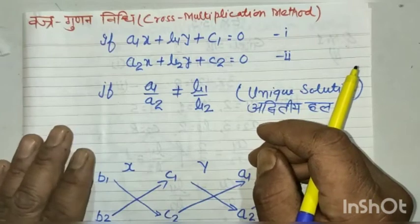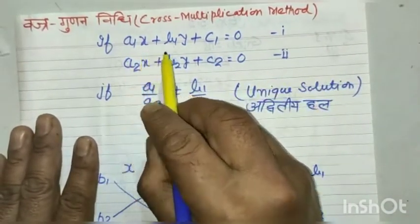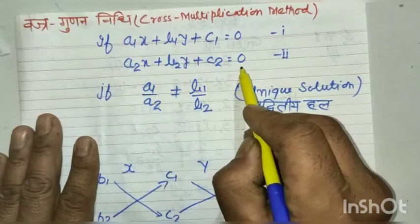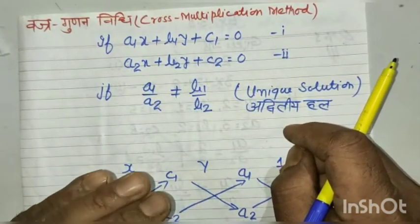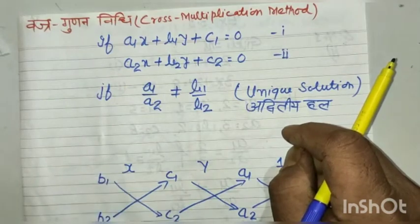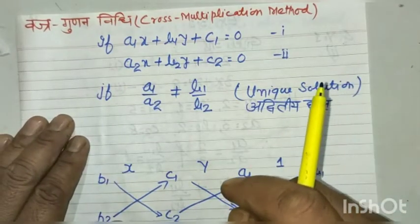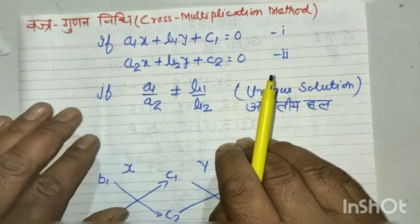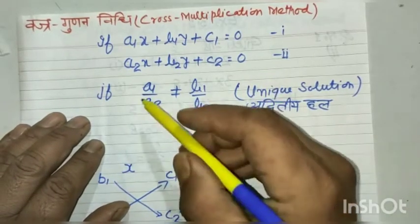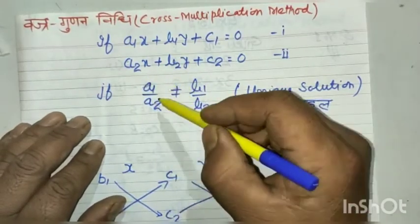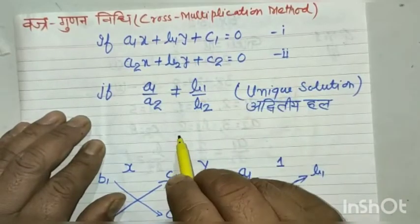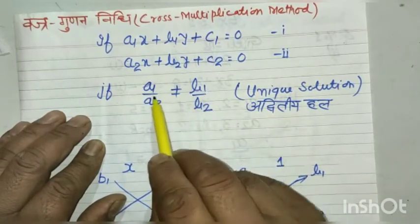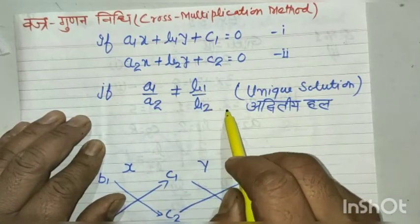How to solve the standard form: a1x + b1y + c1 = 0 and a2x + b2y + c2 = 0. The condition a1/a2 = b1/b2 = c1/c2 relates to the consistency of the system.